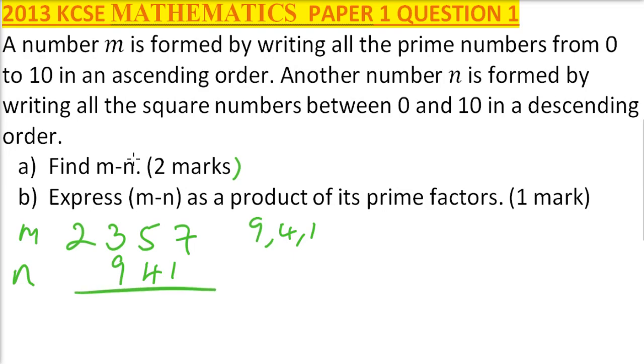When you subtract, you get this is 6, this is 5 minus 4 is 1, and then we have 13 minus 9 is 4, then we have 1. So that is the number that you get when you subtract n from m.